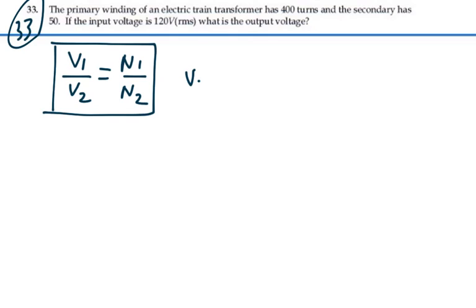So our output voltage, V2, is going to equal the secondary turns to the primary turns times our primary voltage.